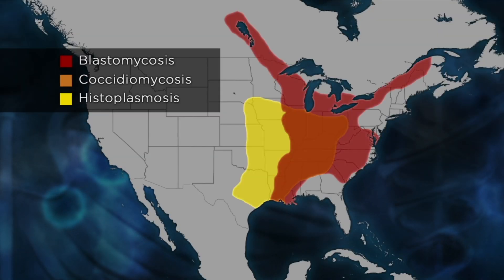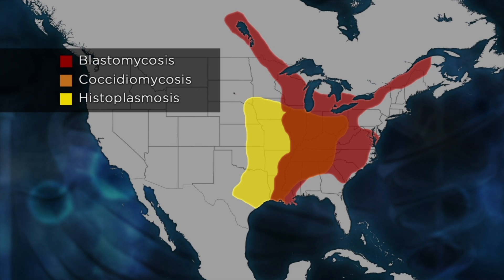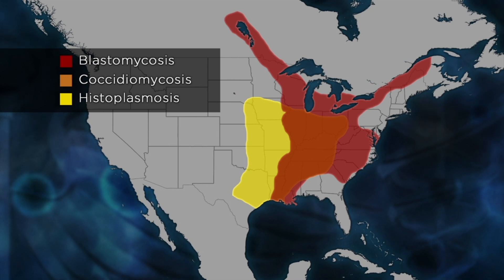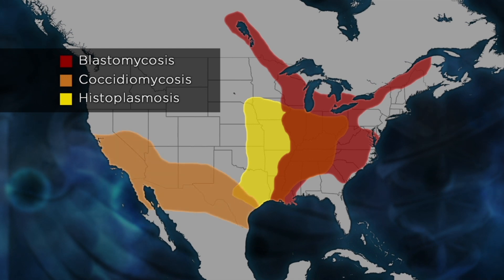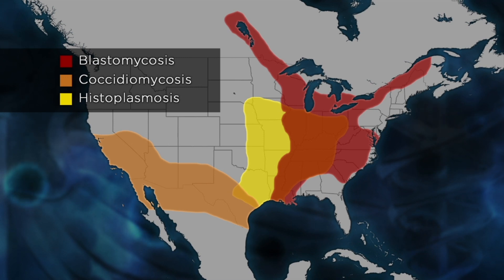Histoplasmosis and blastomycosis are commonly found in the drainage area of the Mississippi River Valley, but isolated cases of both diseases may occur in other parts of the country. Coccidiomycosis is unique to the southwestern United States, including Arizona, New Mexico, and Southern California.